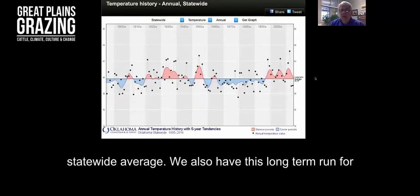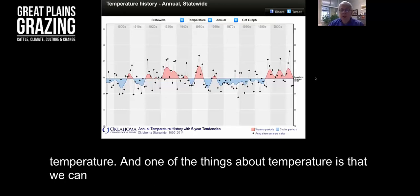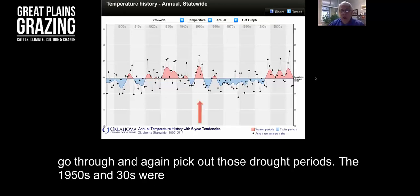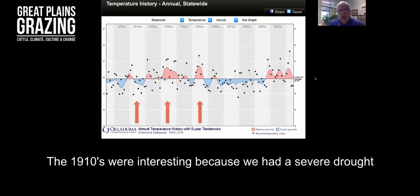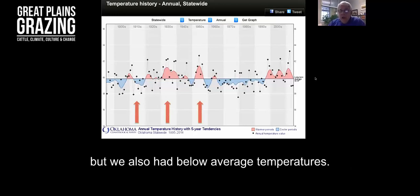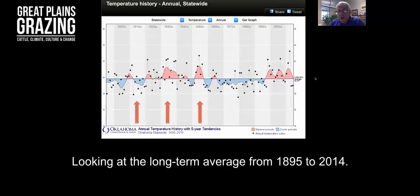We also have this long-term run for temperature. One of the things about temperature is that we can go through and again pick out those drought periods. The 1950s and 1930s were very warm, above average. The 1910s were interesting because we had a severe drought, but we also had below average temperatures looking at the long-term average from 1895 to 2014.